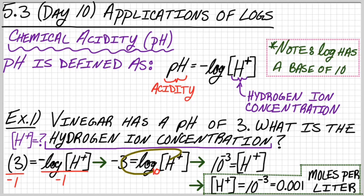That's our example for chemical acidity. The pH is a function of hydrogen ion concentration. That's it for these notes. I'll see you in class.